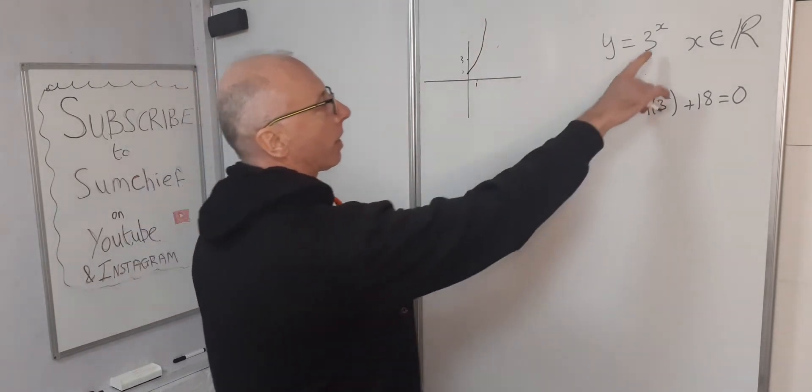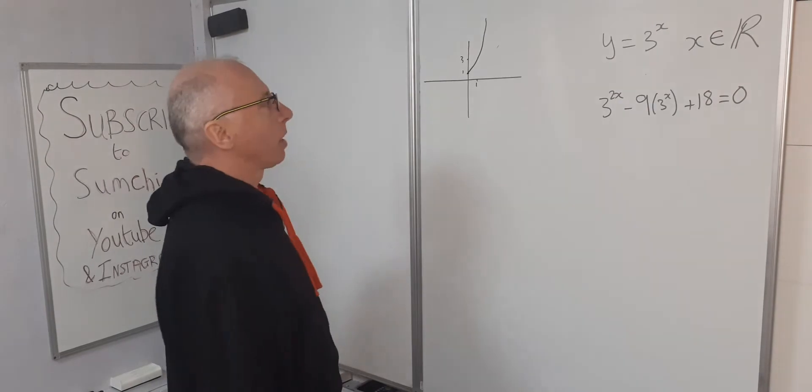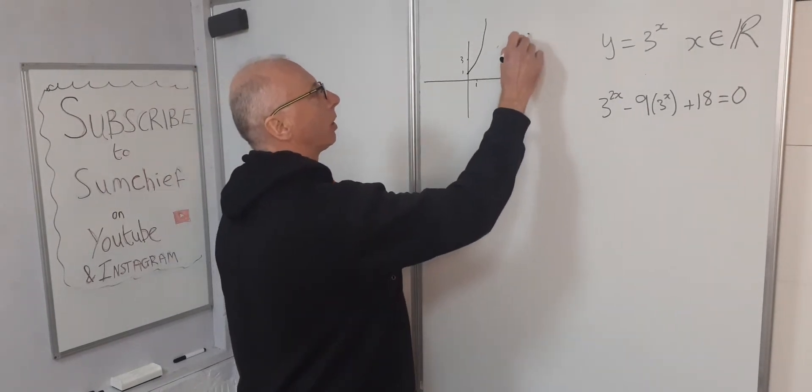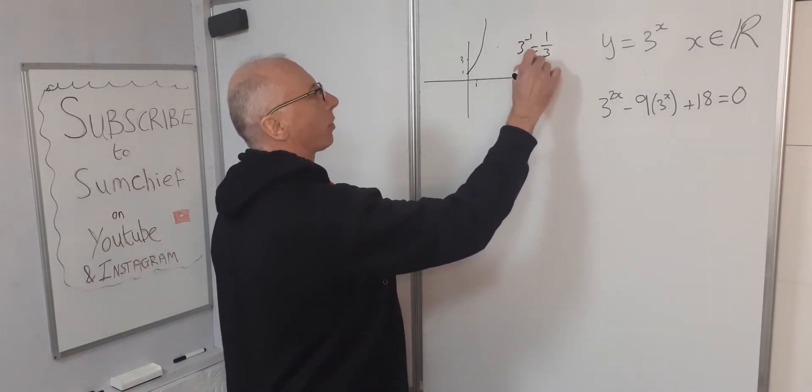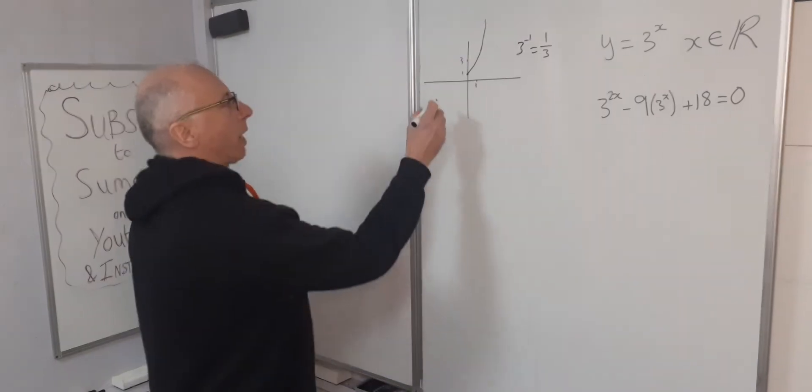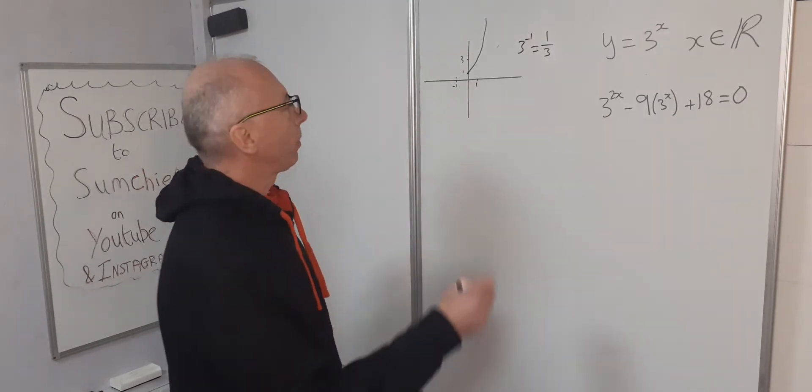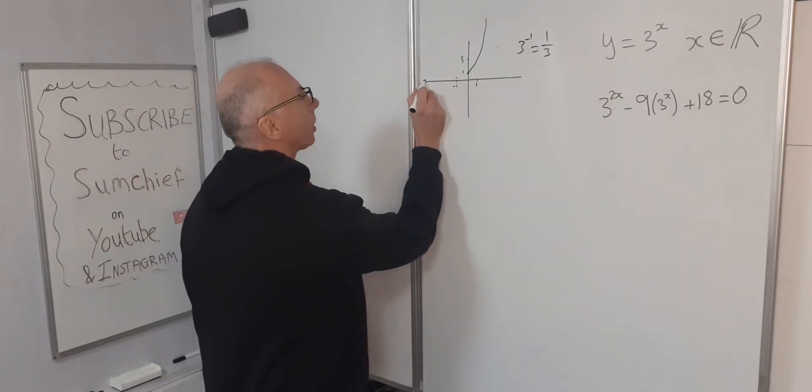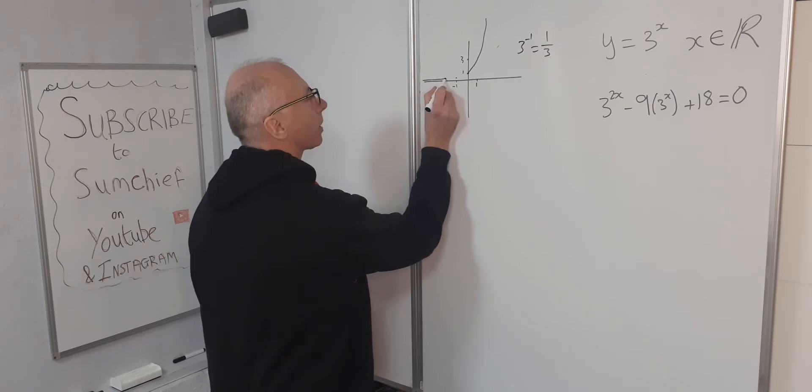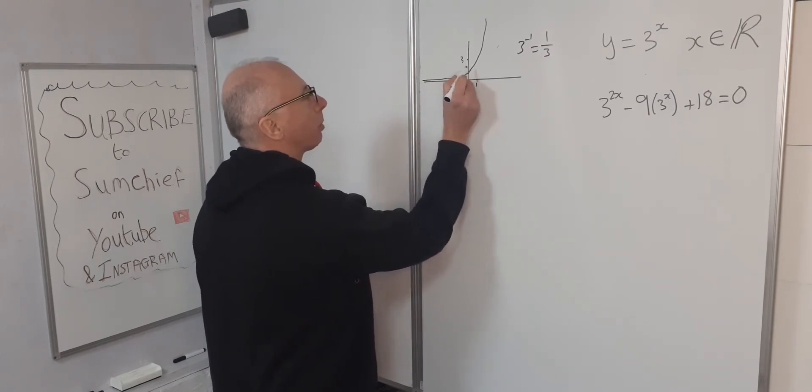Now what about when x is minus 1? So 3 to the power of minus 1 equals 1 over 3. So when x is minus 1, y is a third, which is going to come somewhere about here. So therefore the graph is going to get really close to the x-axis and then gradually build up here.